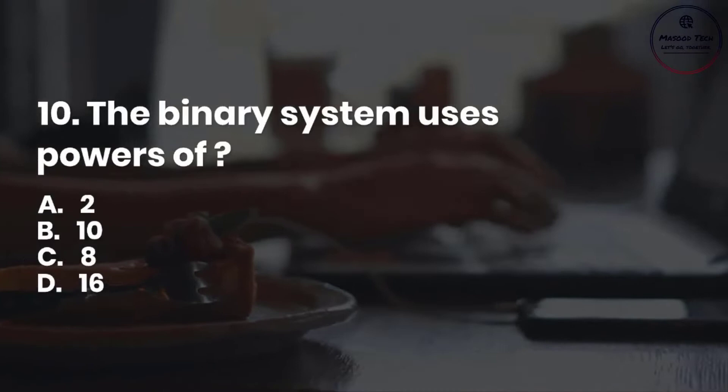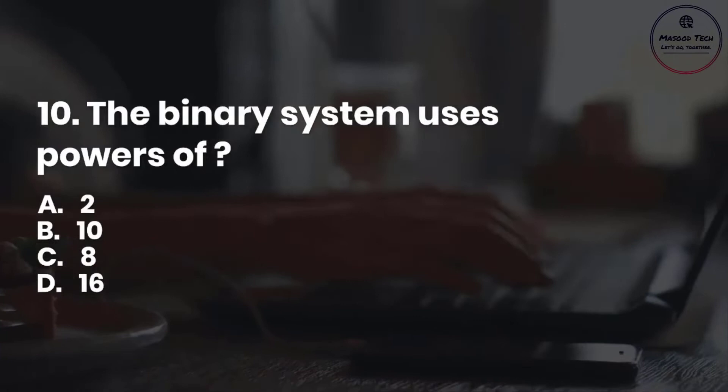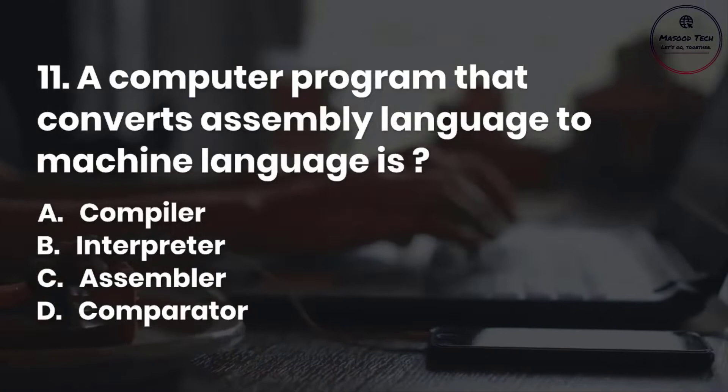Number 11. A computer program that converts assembly language to machine language is: A. Compiler. B. Interpreter. C. Assembler. D. Comparator. Correct answer is C.